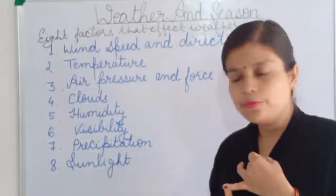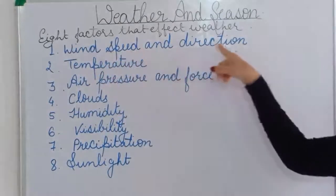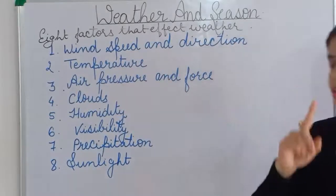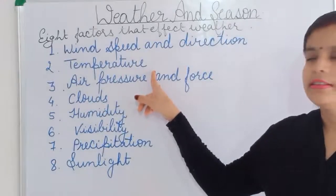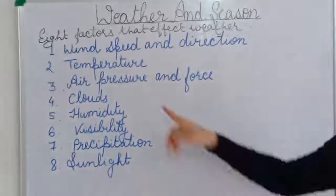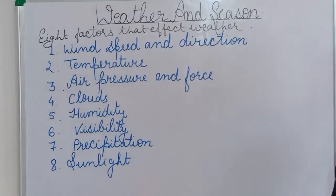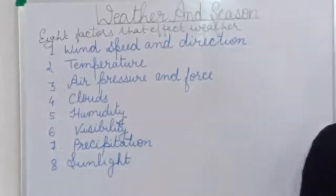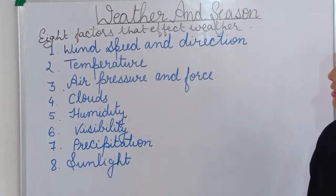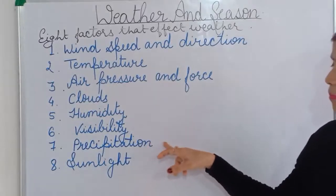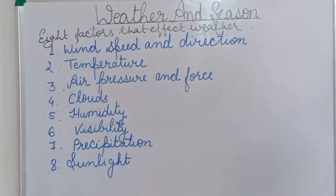These are the eight factors that affect weather. First is wind speed and direction. Second is temperature. Third is air pressure and force. Fourth is clouds — how much cloud is there. Then humidity, visibility, precipitation, and sunlight.